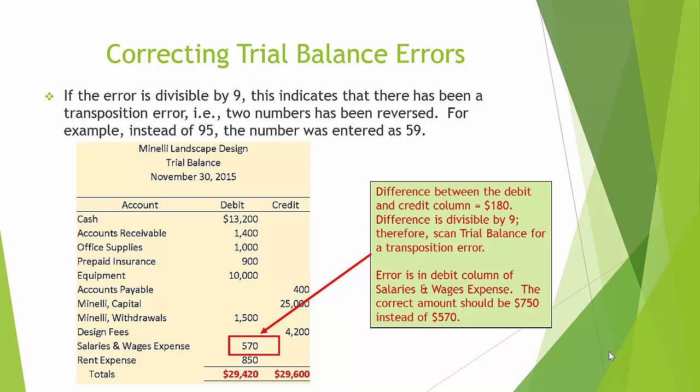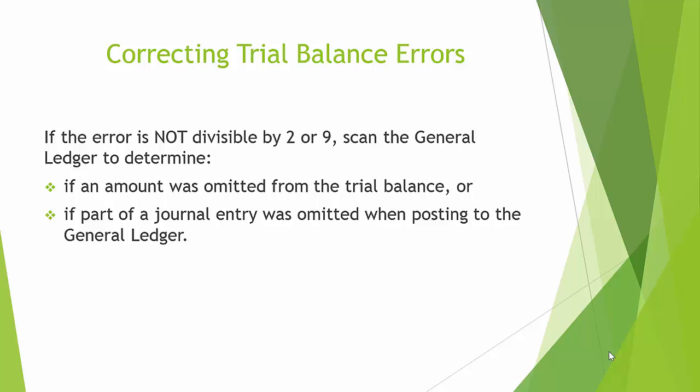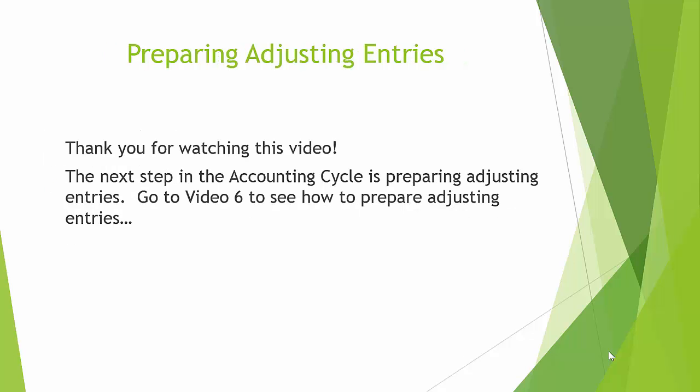If the error is not divisible by 2 or 9, scan the general ledger to determine if an amount was omitted from the trial balance, or if part of a journal entry was omitted when posting to the general ledger. That's it. Thank you for watching. The next step in the accounting cycle is preparing adjusting entries — go to video 6 to see how to prepare adjusting entries.